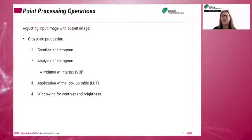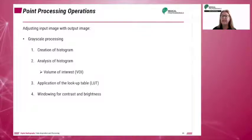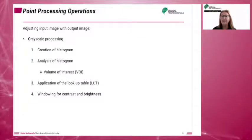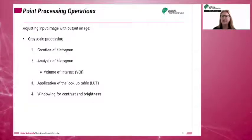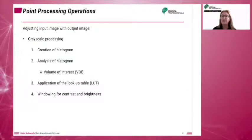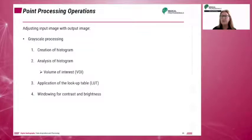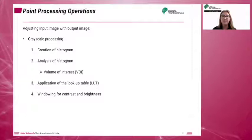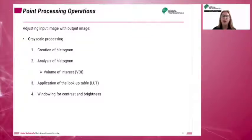One of the advantages of digital imaging is the ability to adjust the image for display. These adjustments can be made either through automatic methods inherent in the programming of the system, or as enhancements made after processing. Carlton and Adler describe point processing as operations performed between the receipt of the input image from the image receptor and the output image viewed on the monitor. Point processing operations include histogram formation and analysis and application of the lookup table, and are automatically performed by the computer prior to image display.